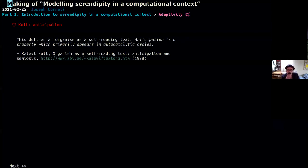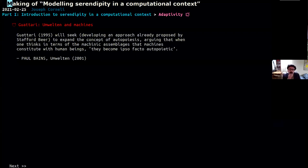So let's go a little bit further. What would it mean to represent, say, oneself to oneself? Now we get something he says here, anticipation is a property which primarily appears in autocatalytic cycles. So we're now representing ourselves to ourselves. And out of this, we're finally getting this concept of anticipation, which in the definition of serendipity is falling down because we're having unplanned discoveries, things we didn't anticipate.